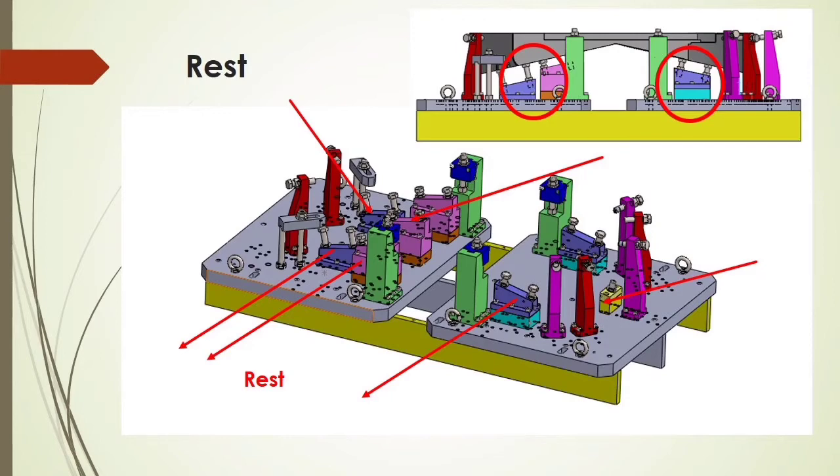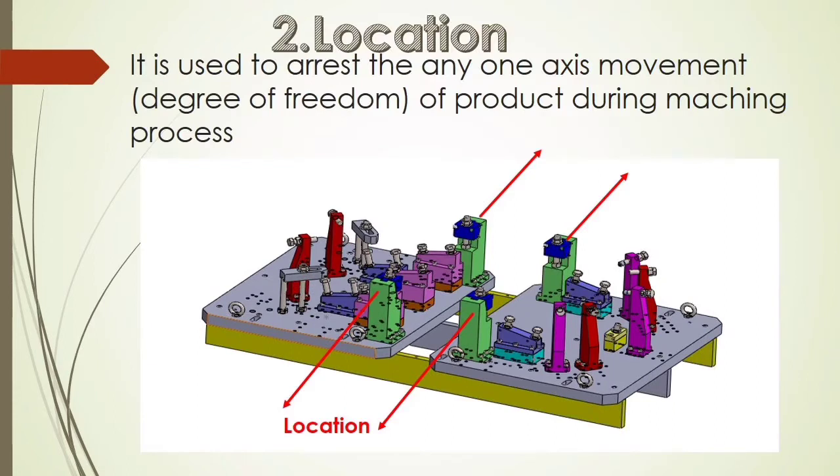Location is used to arrest the degree of motion of the component during the machining process. It can arrest the degree of motion in any direction.